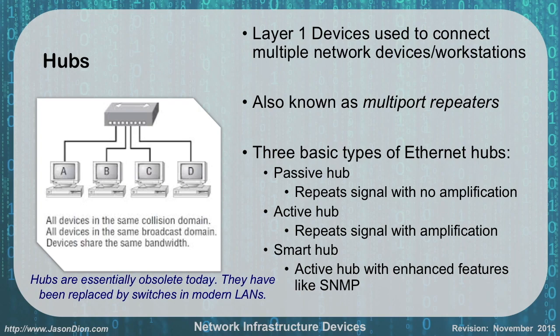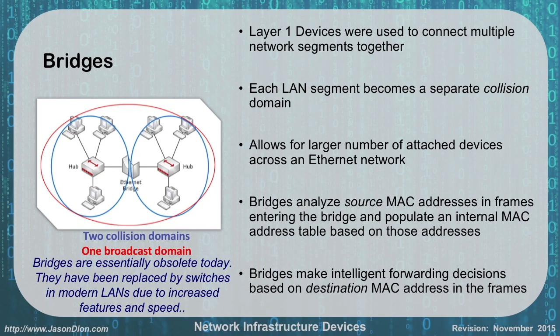Switches replaced hubs because a switch combines a hub and a bridge. A bridge is a layer two device used to connect multiple network segments together. Everything that touches a hub is in the same collision domain. If that got too big with, say, 24 devices, they would all be stepping on each other constantly. To break those collision domains up, we would use an Ethernet bridge.